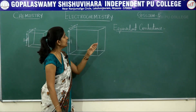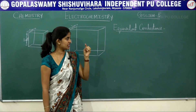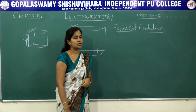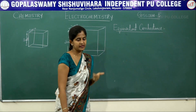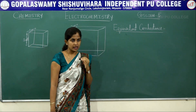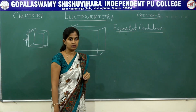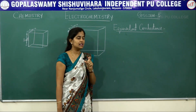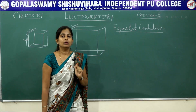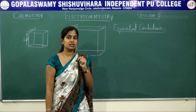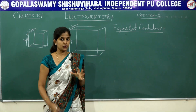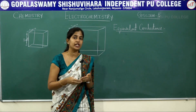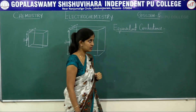In this session we will be discussing about equivalent conductance. In your previous session, session 4, we discussed about specific conductance. How to define equivalent conductance? Very simple, as the word itself tells, it is the conductance offered by all the ions of an electrolyte. The amount of that electrolyte is one gram equivalent weight of an electrolyte when it is dissolved in an aqueous medium.